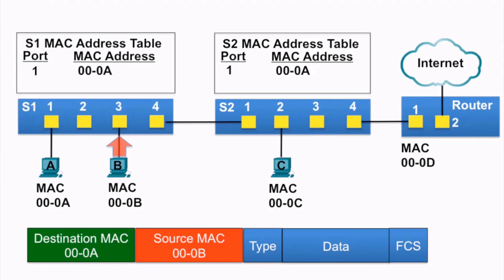PCB sends it to switch S1. S1 notices that the source MAC address is not in its MAC address table, so it adds the MAC address and the incoming port number.